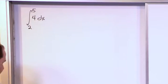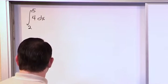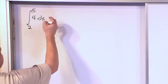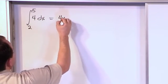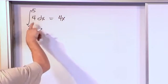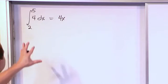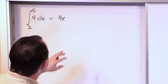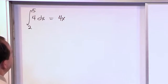Alright, so what would be the anti-derivative of this? The anti-derivative of 4 would be 4x. How do we know that? Because if we take the derivative of this, we're going to get back what we started with. Alright, so we've actually done the integration. We've found the function that we call the anti-derivative.